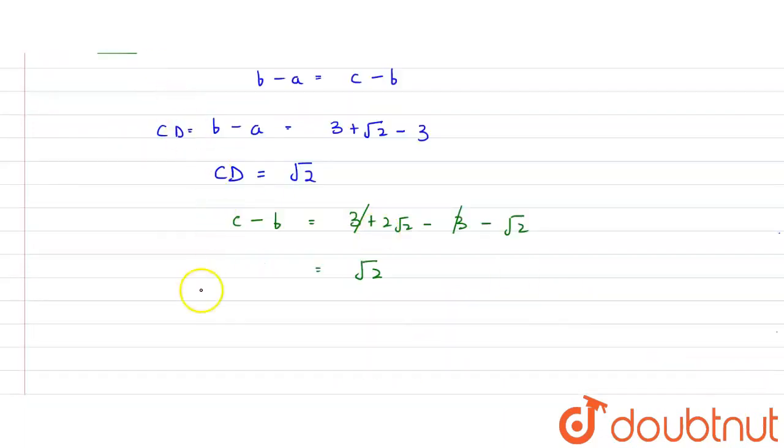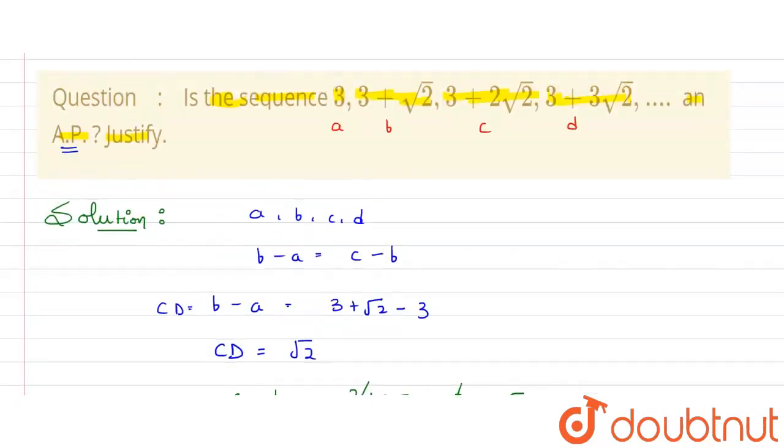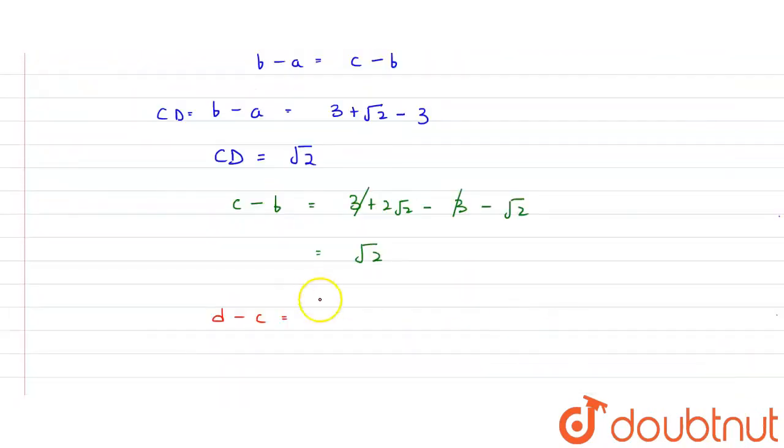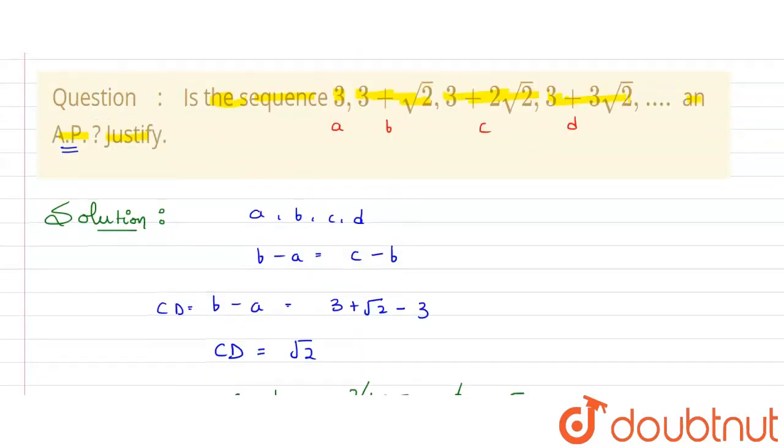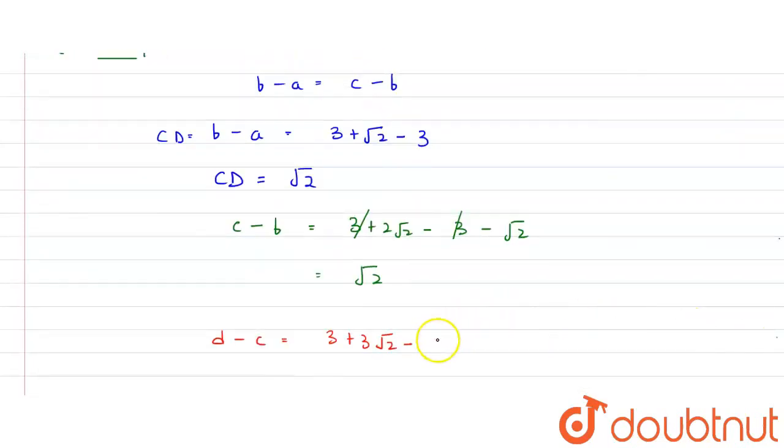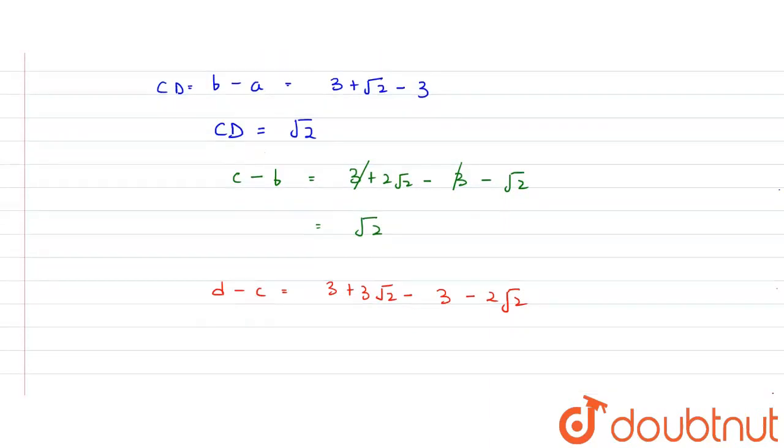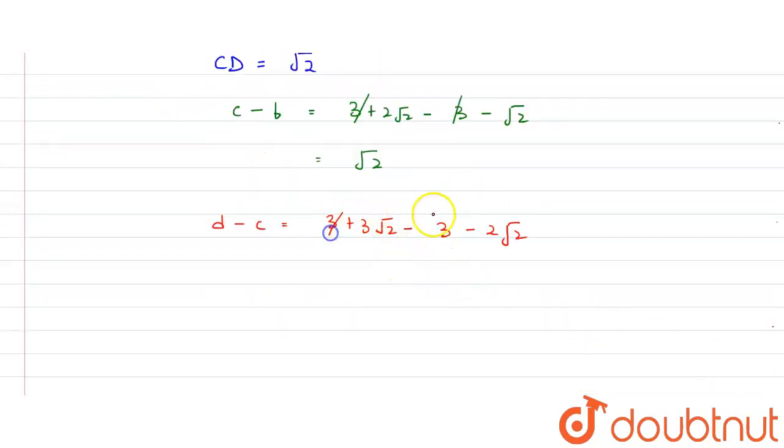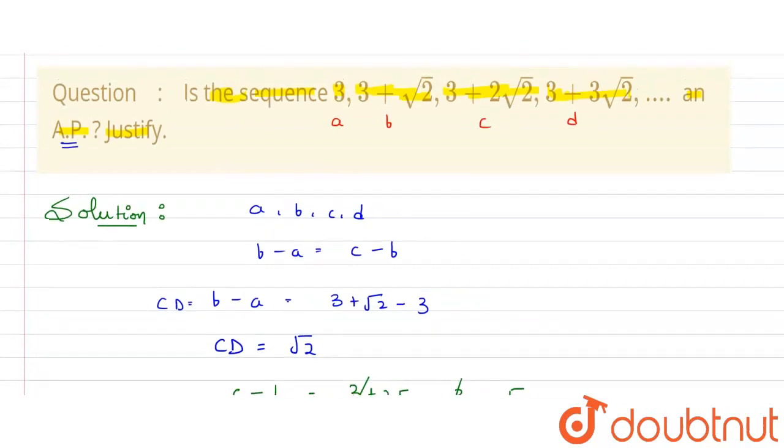But, since we are having some more terms, let's check some other terms. Then, we will have D minus C. Put the values of D and C: 3 plus 3 root 2 minus the value of C, which is 3 plus 2 root 2. So, minus 3 and minus 2 root 2, because we will open the bracket here with a minus sign. This plus 3 and minus 3 will get cancelled. So, what is the common difference from here? Common difference will be root 2. So, it will be valid here.